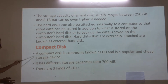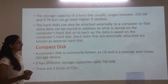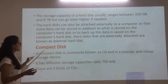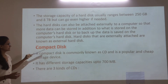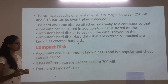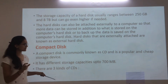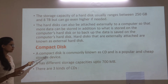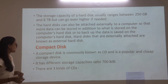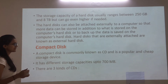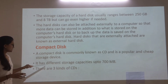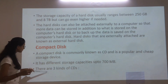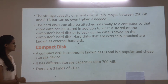Compact disk: A compact disk, commonly known as CD, is a popular and cheap storage device. It is commonly used and available at low cost. It has a storage capacity of up to 700 MB. There are three kinds of CD.